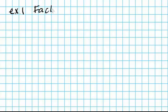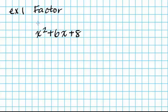Example number one, we're going to factor the trinomial x squared plus 6x plus 8. When we factor trinomials, we work with the first term and the last term. I'm going to put a multiplication sign above them because the terms below have to multiply up to x squared, and the terms below 8 have to multiply to 8. The center terms have to add up to 6x.